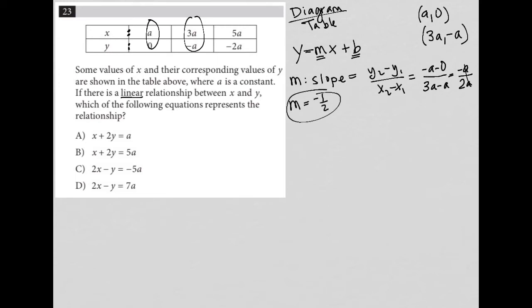Next, I want to find my B value, the Y intercept. I can do that by plugging in an ordered pair, right, and plugging in the slope that I just found. So I'm going to go with the A comma zero for my X value and my Y value. So instead of Y equals MX plus B, I replace Y with zero. Again, that's coming from the ordered pair here.